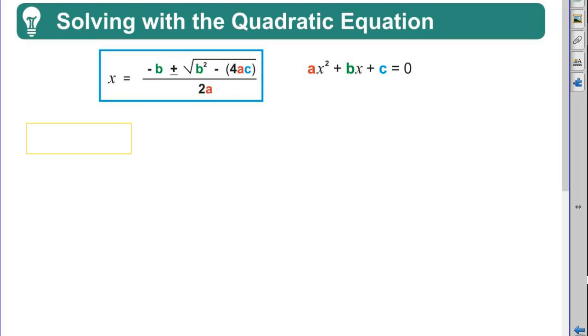So the a is the coefficient of the squared term. The b is the coefficient of the variable of the first power term. The c is the constant when it all equals zero. So it's got to be in that proper format.